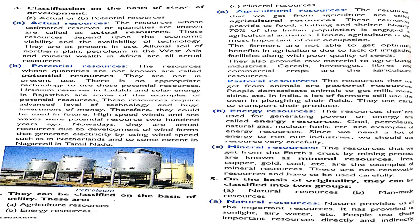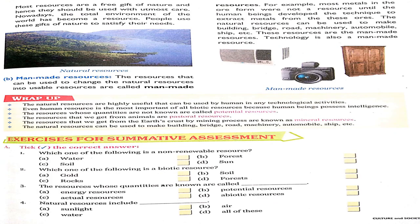On the basis of originality, resources can be classified into two groups: first, natural resources, and second, manmade resources. Manmade resources are those that are created by changing the natural resources using human skills and technology. That is called manmade resources.